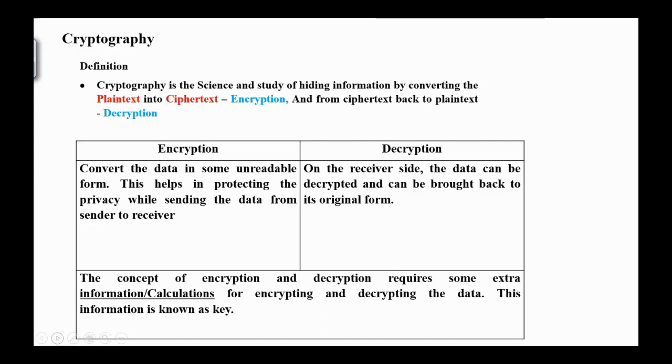In the previous meeting, we got familiar with the basic definitions and the historical background. Again, cryptography is the science and study of hiding information by converting the plaintext into ciphertext, and this phase is called encryption, and from ciphertext back to plaintext, and this phase is called decryption.